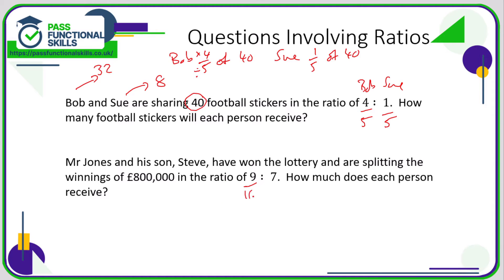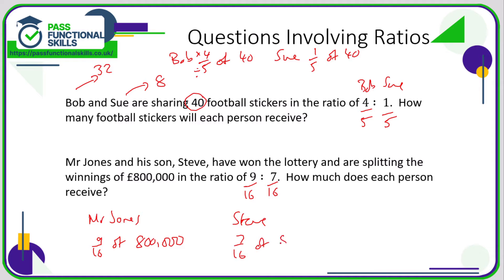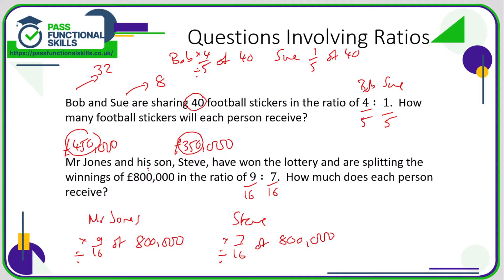In the next example we're dealing in sixteenths because nine plus seven is sixteen. Mr. Jones is going to receive nine-sixteenths of eight hundred thousand, and his son Steve seven-sixteenths of eight hundred thousand. For Mr. Jones: eight hundred thousand divided by sixteen, multiplied by nine, is four hundred and fifty thousand. For Steve: eight hundred thousand divided by sixteen, multiplied by seven, is three hundred and fifty thousand. We know this is correct because three hundred and fifty plus four hundred and fifty equals eight hundred.